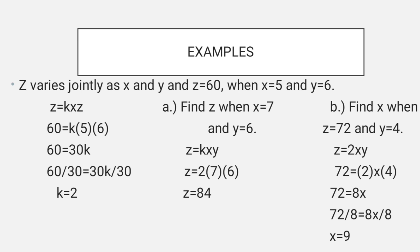Example: Z varies jointly as X and Y, and Z is 60 when X is 5 and Y is 6. First, let's find the constant. Z equals K times X times Y, so 60 equals K times 5 times 6, which is 30K. Dividing each side by 30 gives K equals 2. Now find Z when X is 7 and Y is 6: Z equals 2 times 7 times 6, which is 84.